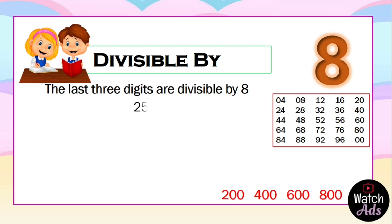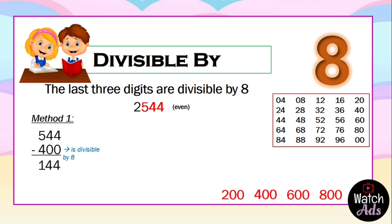Let's have another example: 2544. First we check if the number is even — it is. For Method 1, we take the last three digits, 544, and check the magic numbers: 200, 400, 600, and 800. The largest we can subtract from 544 is 400, giving us 144.